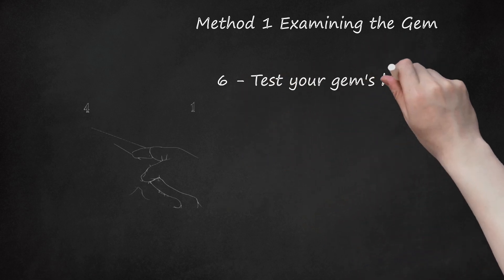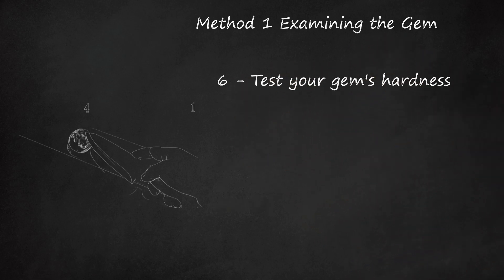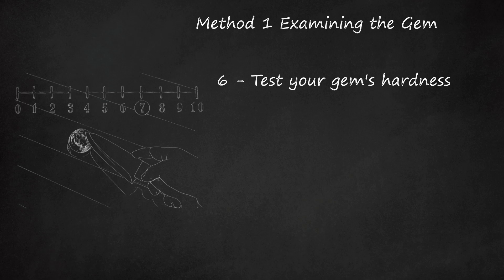6. Test Your Gem's Hardness. The hardness of a gem is measured on a scale from 1 to 10. Amethyst is a 7, meaning it's a fairly hard gem. Testing the hardness of a gem is a somewhat inexact process. However, you can test the hardness of a gem by seeing if it's scratch-resistant to other gems. If your amethyst is authentic, it should be scratch-resistant to anything that falls lower than 7 on the hardness scale. Everyday objects fall fairly low on the hardness scale.